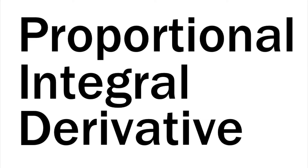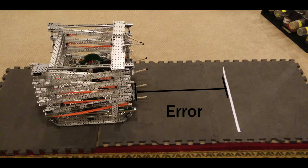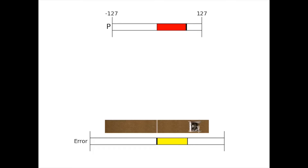In order to easily talk about the PID loop, we should define the term error. Error refers to the difference between the current sensor value and the desired sensor value at any given time. The P term is directly proportional to the error at the current time. In code, this would be a constant times the current error. This causes the robot to move at a high speed when far away from the endpoint and more slowly when closer to the endpoint.